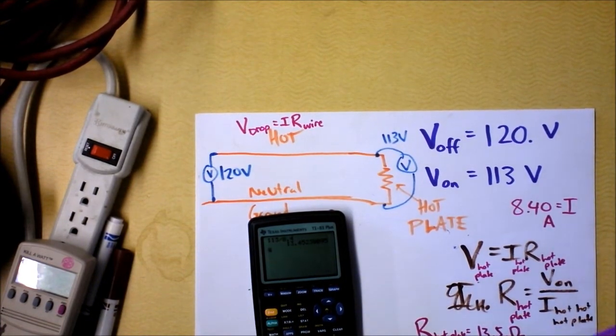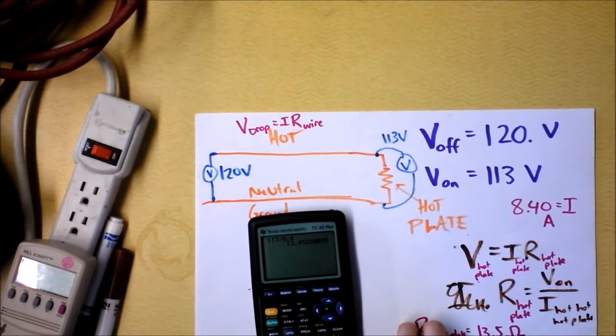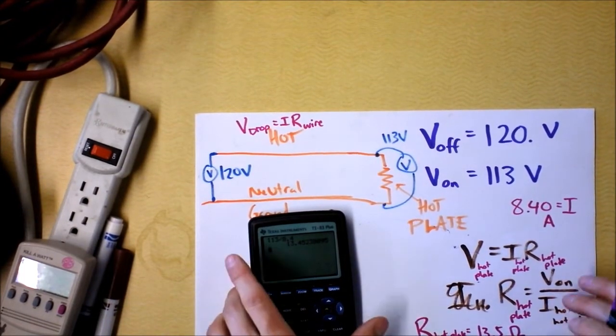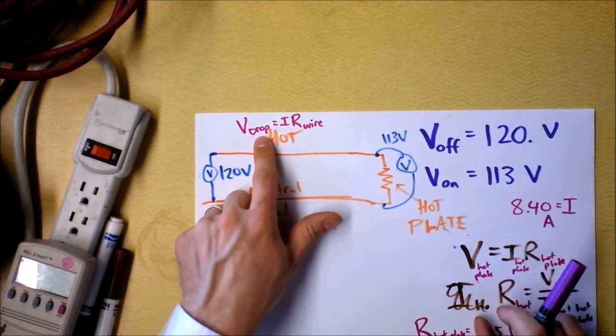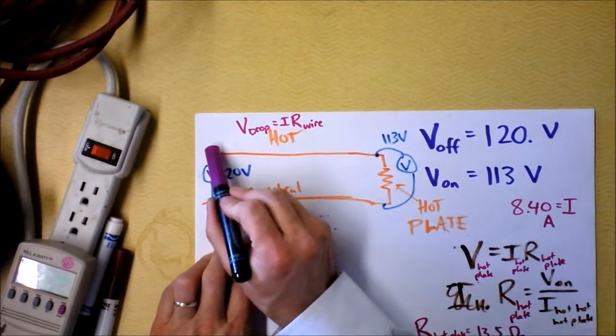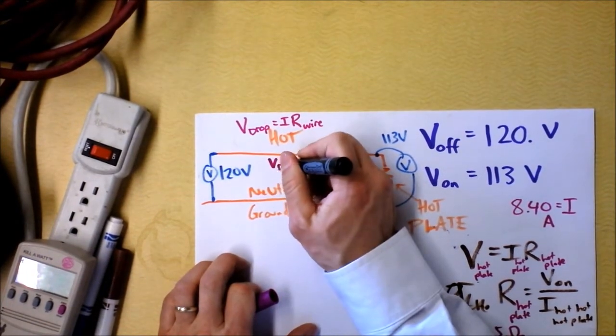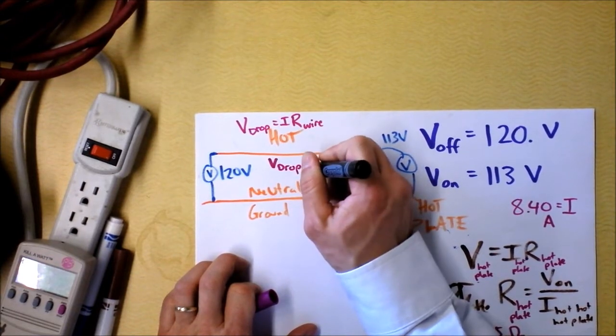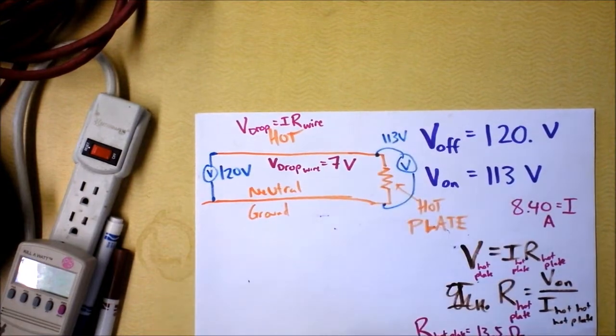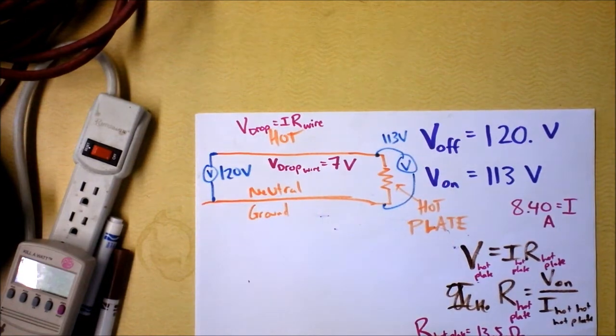That's the resistance of our hot plate, and I propose the resistance of the hot plate depends on the temperature of the hot plate, but it doesn't depend on the voltage that we're putting across the hot plate. Now, I'm arguing that there is a voltage drop across the wire, and I'm going to actually say that that voltage drop across the wire is 7 volts. Let's say that there's a voltage drop of 7 volts.